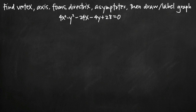Today we're going to be talking about how to find the vertex, axis, focus, directrix, and asymptotes of a hyperbola, and then how to draw and label the graph of the hyperbola. In this particular problem, we've been given the equation 4x squared minus y squared minus 24x minus 4y plus 28 equals 0.